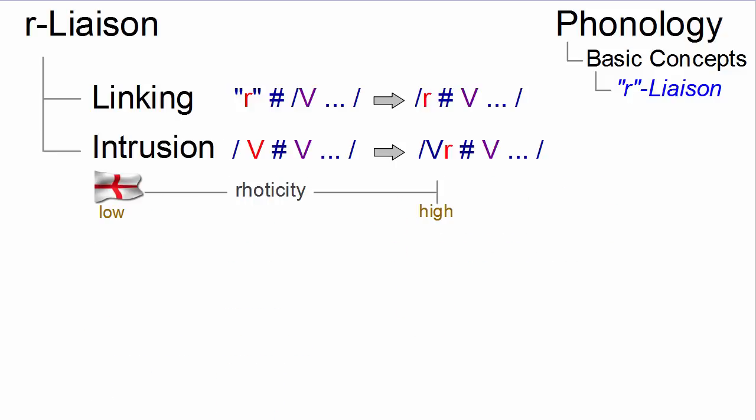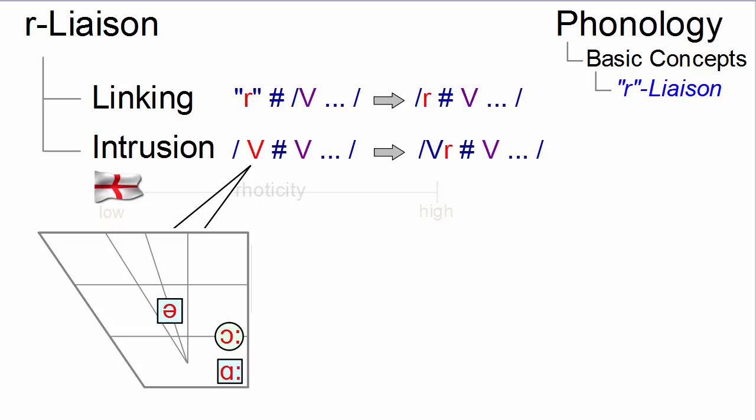The phenomenon of intrusion or the intrusive R is confined to the non-rhotic varieties of English, such as received pronunciation. Here, the phoneme R can be inserted between two vowels, even if it is not represented orthographically. The condition is, the final vowel of the first item must be a low back or a central vowel.